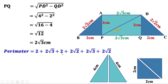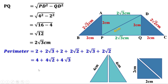2 plus 2 is 4, 2 root 2 plus 2 root 2 is 4 root 2, and 2 root 3 plus 2 root 3 is 4 root 3. So this can be written as 4 plus 4 root 2 plus 4 root 3. Taking 4 as a common factor, we get 4 into (1 plus root 2 plus root 3). Therefore the perimeter of this trapezium is 4 into (1 plus root 2 plus root 3) centimeters.